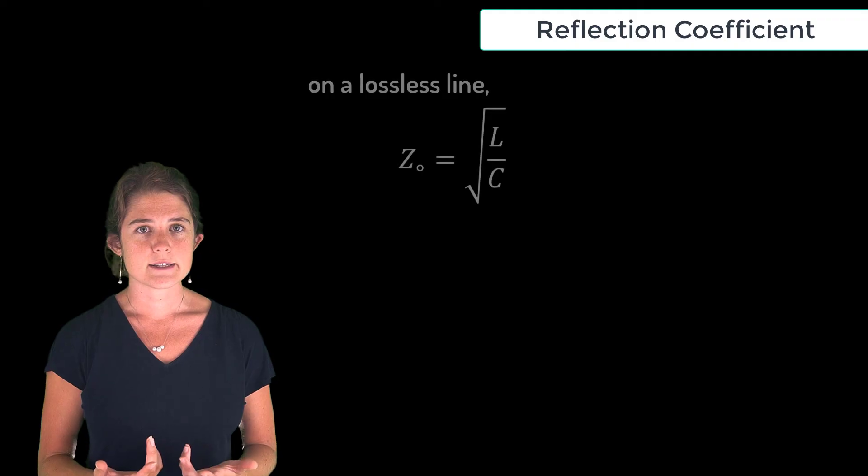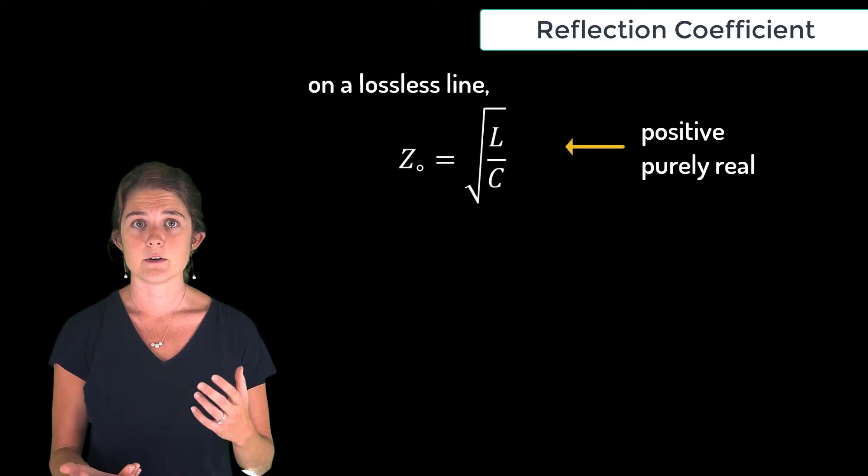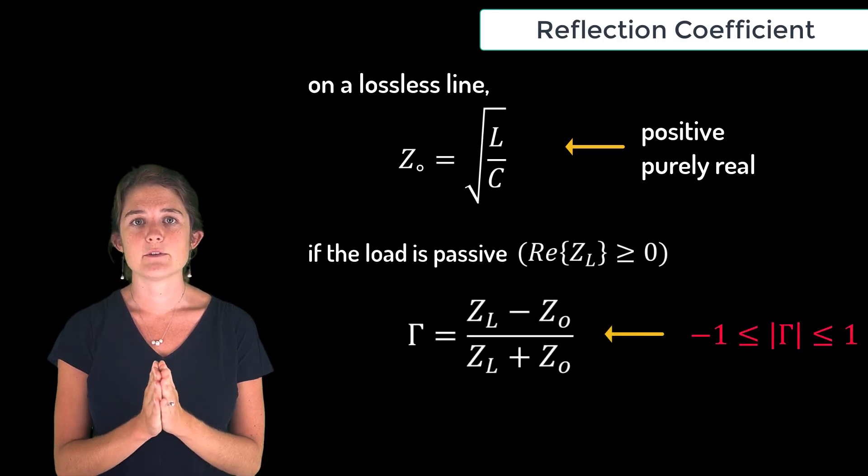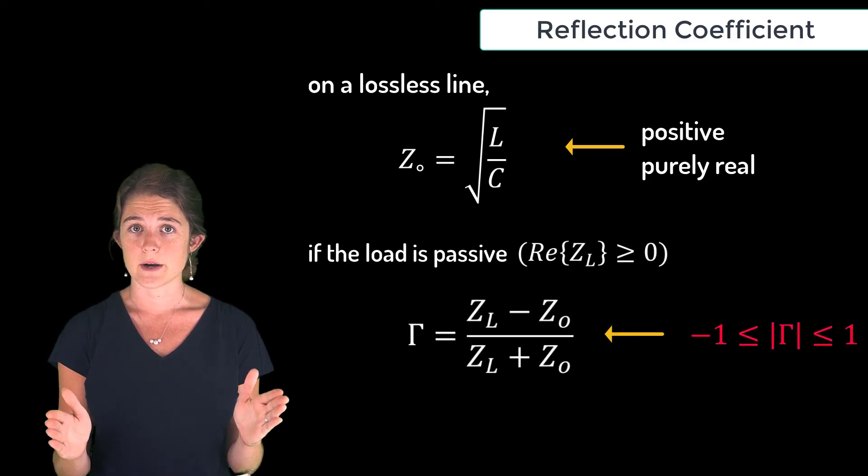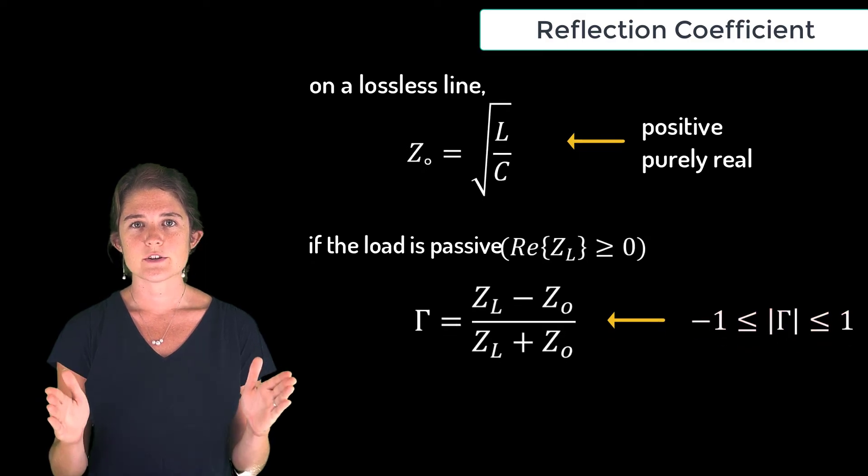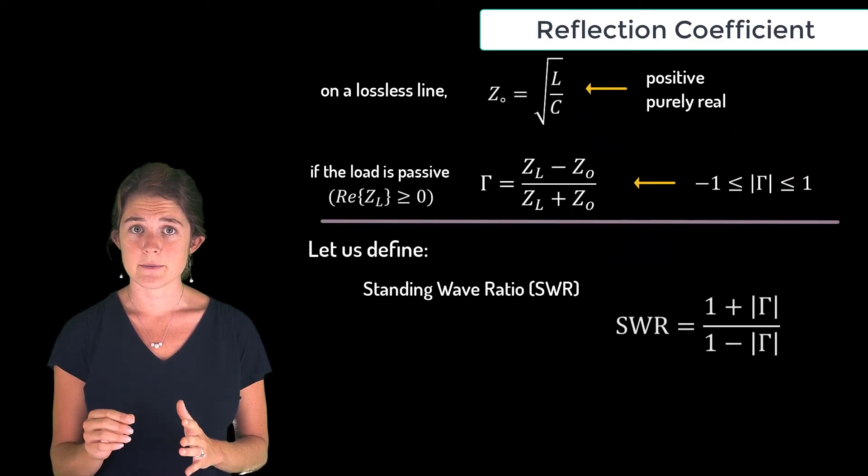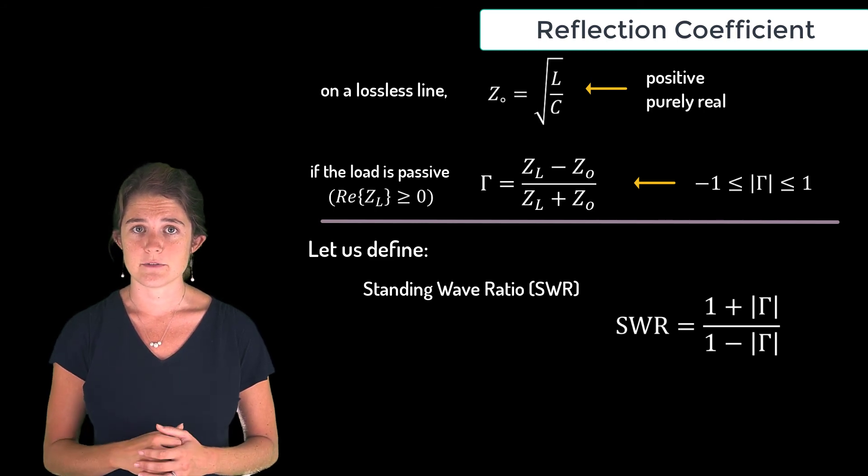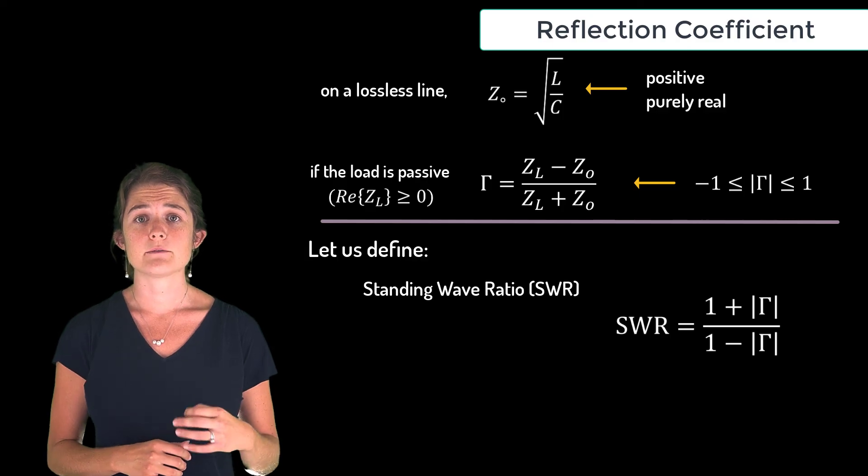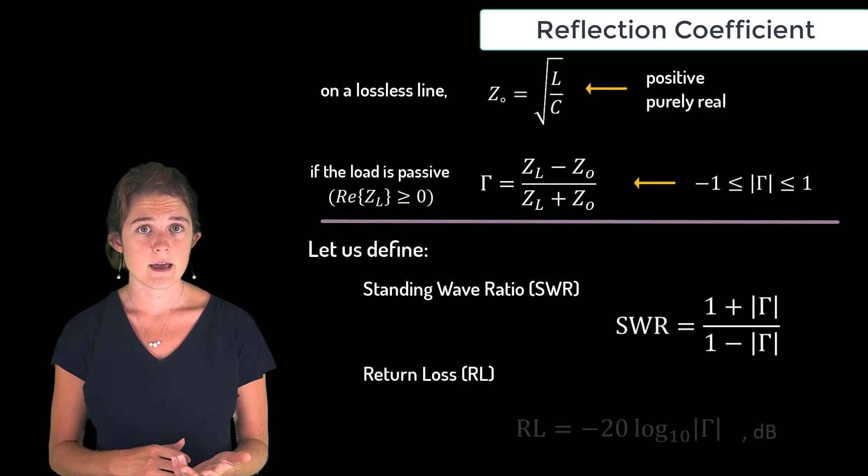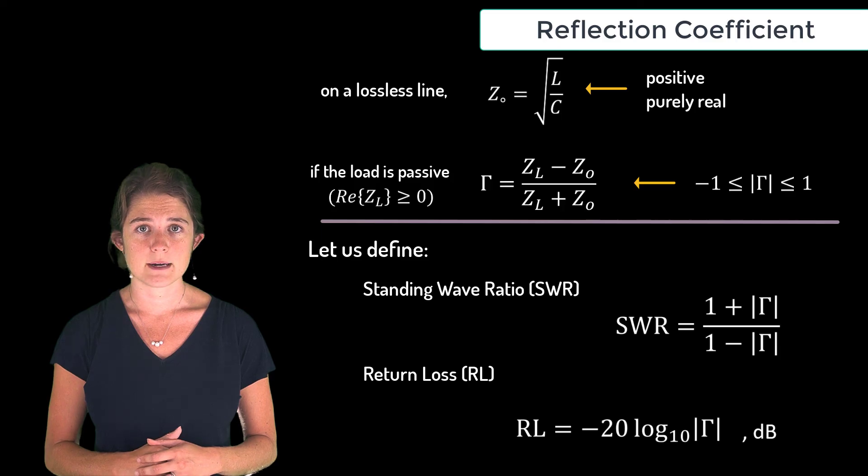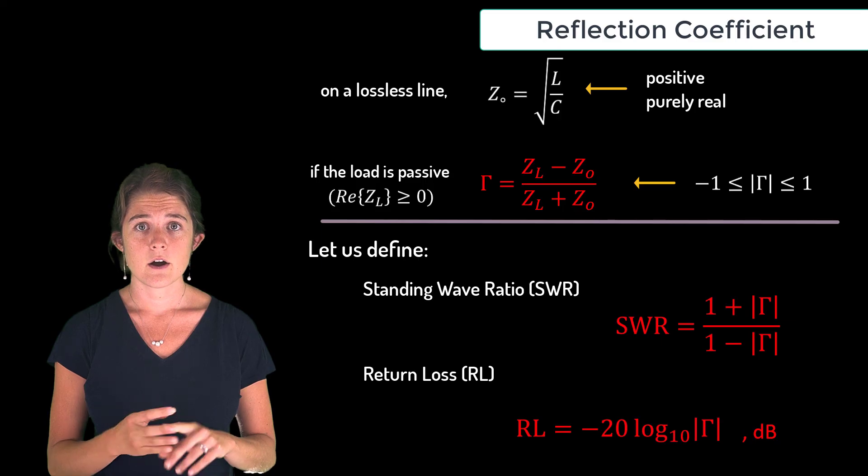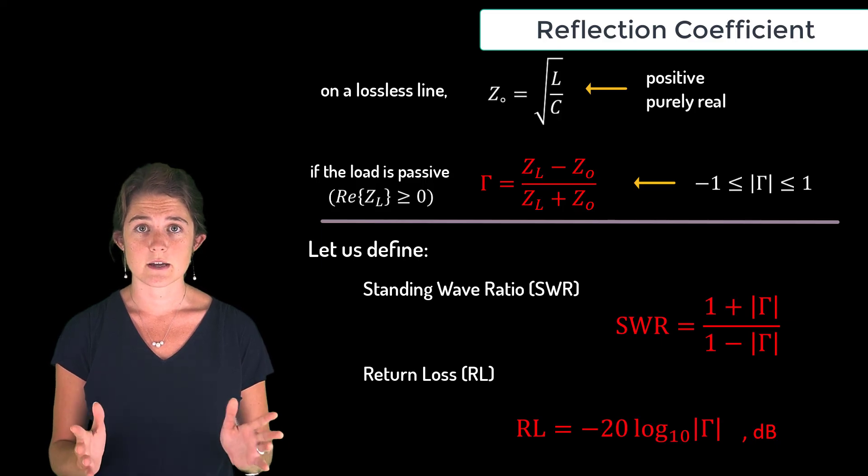Note that on a lossless line, the characteristic impedance is positive and purely real. In this case, as long as the load is passive, gamma will have a magnitude between 0 and 1. We will also define the standing wave ratio, or SWR, as 1 plus the magnitude of gamma over 1 minus the magnitude of gamma, and we will define return loss, or RL, as negative 20 log base 10 of the magnitude of gamma. Note that gamma, SWR, and RL are all just alternative ways of talking about the reflection.